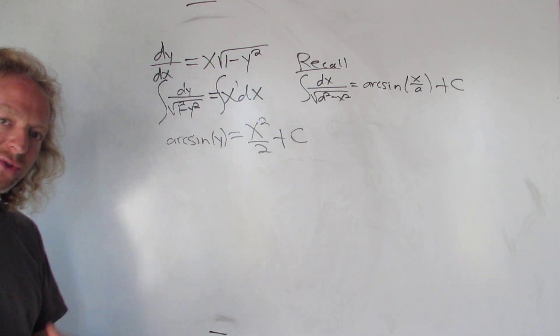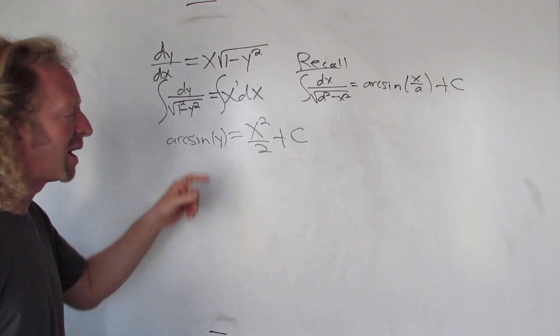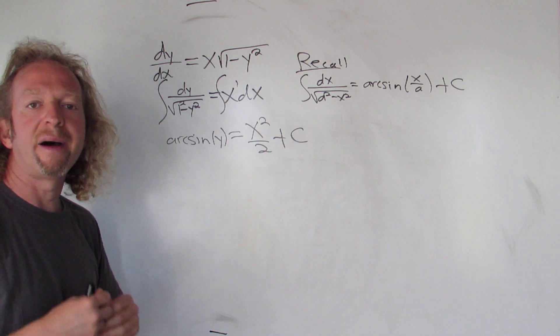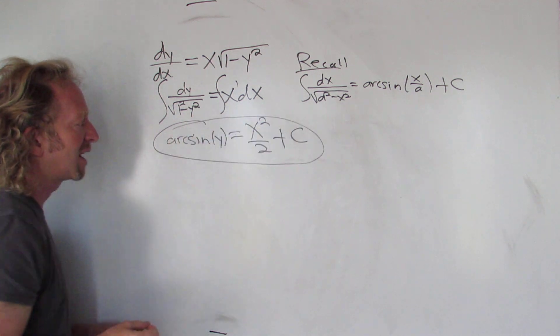So this would be what's called an implicit solution to our differential equation. What that means is that we have a solution, but y is not explicitly given as a function of x. So this is called an implicit solution. To find the explicit one, we can solve for y.